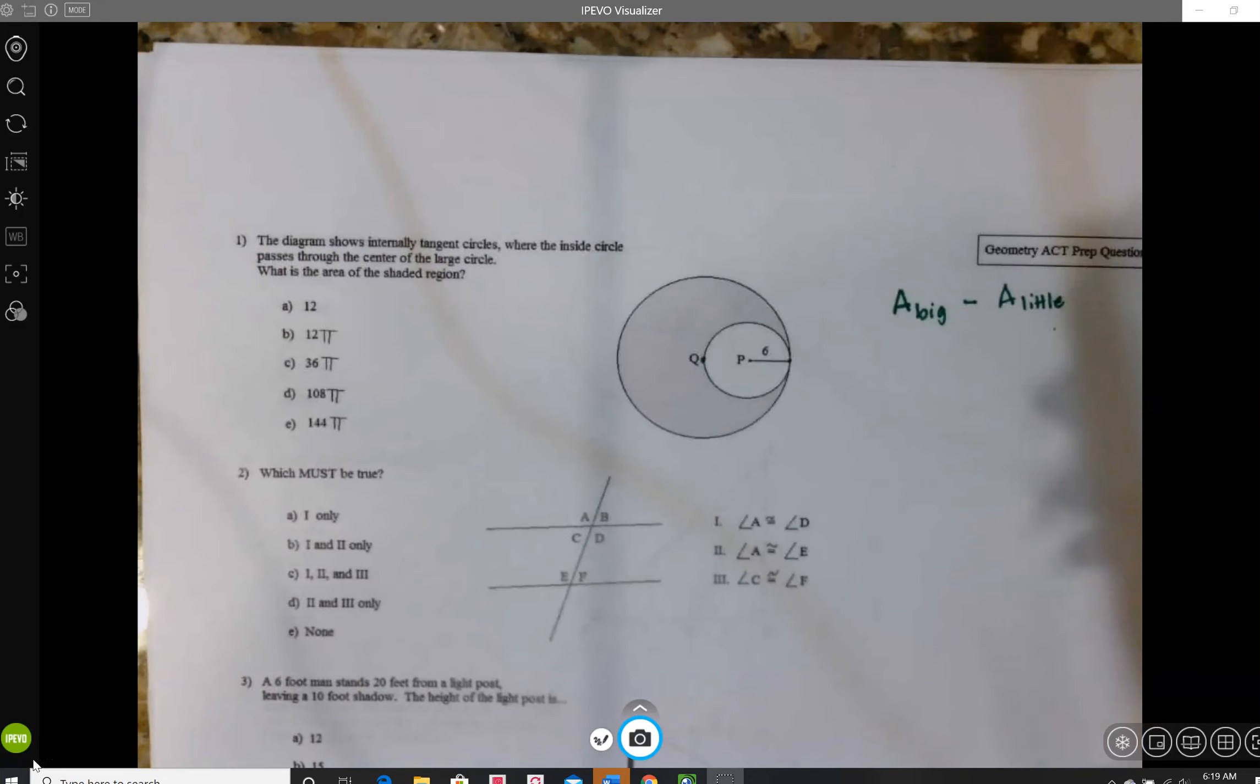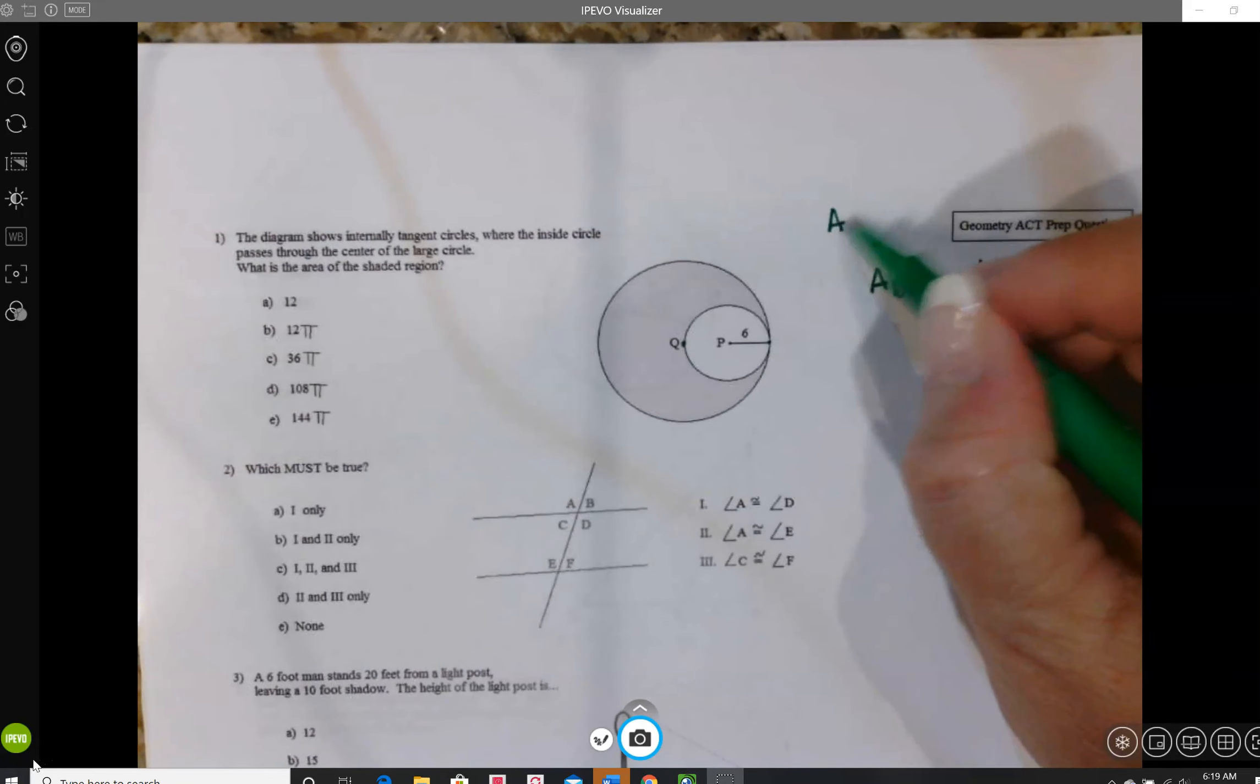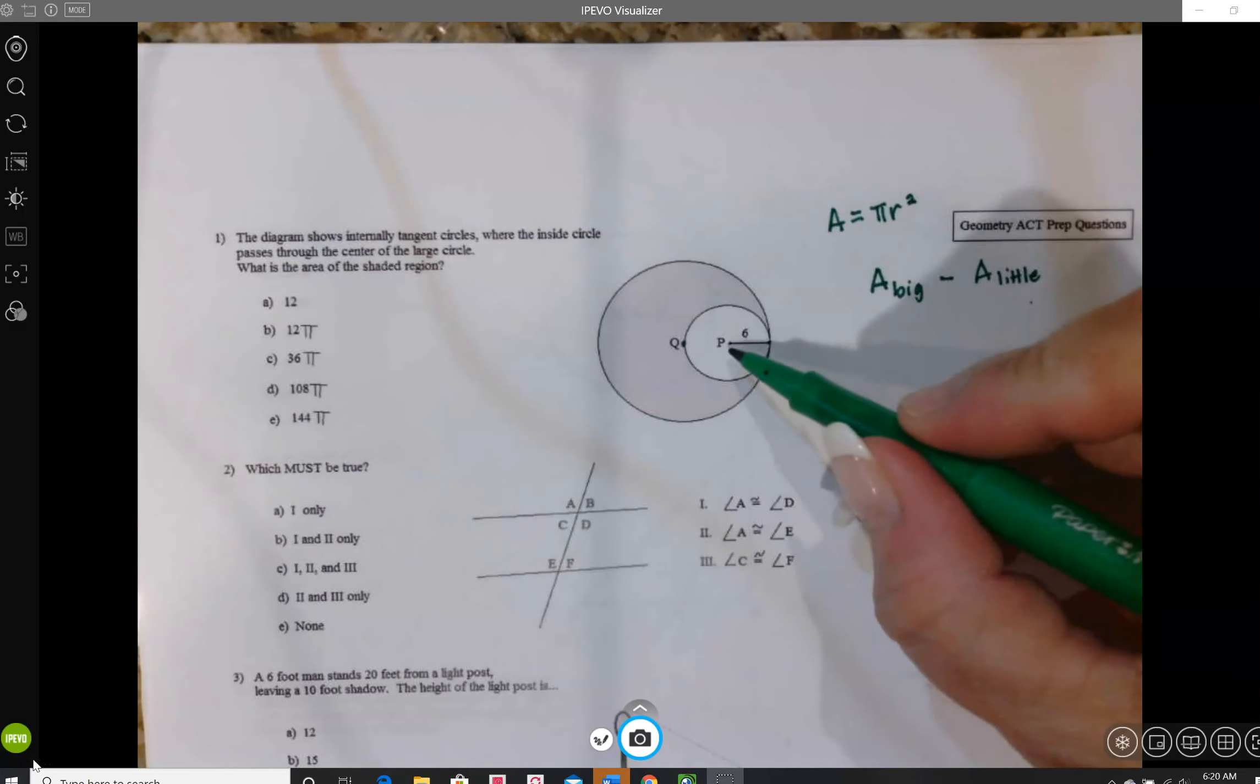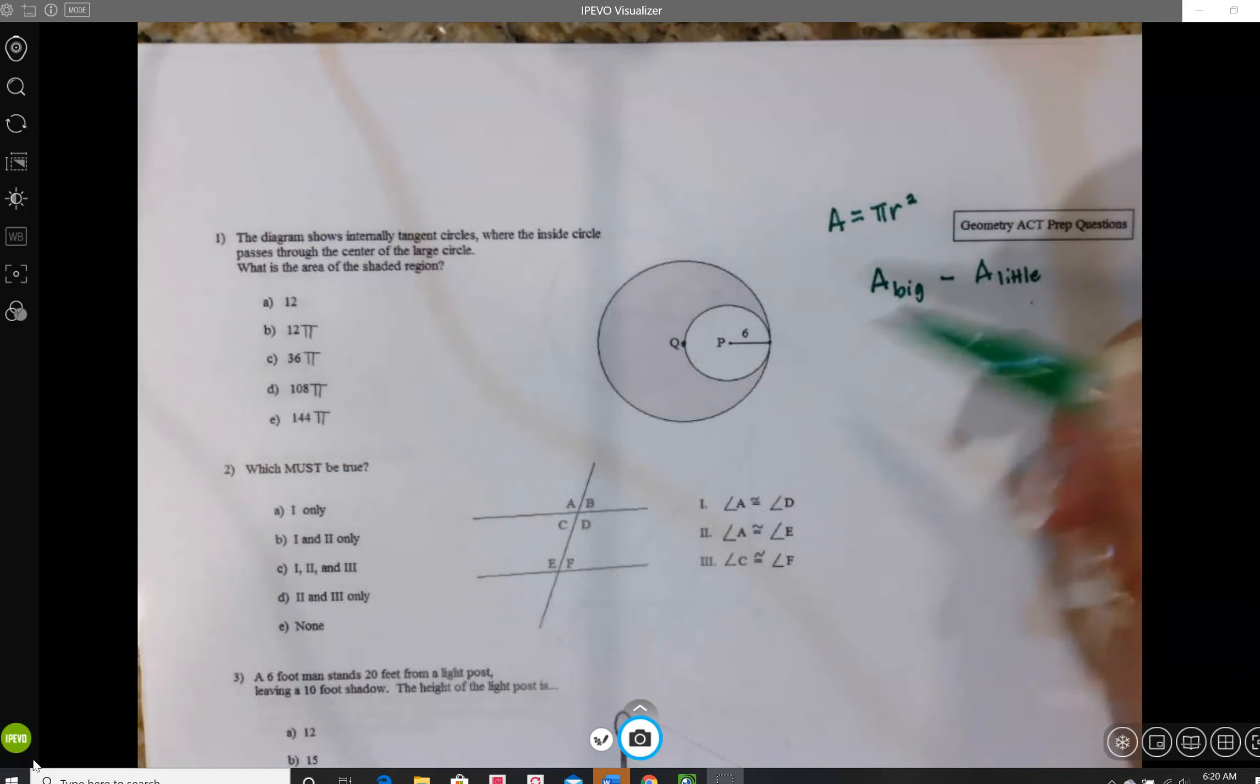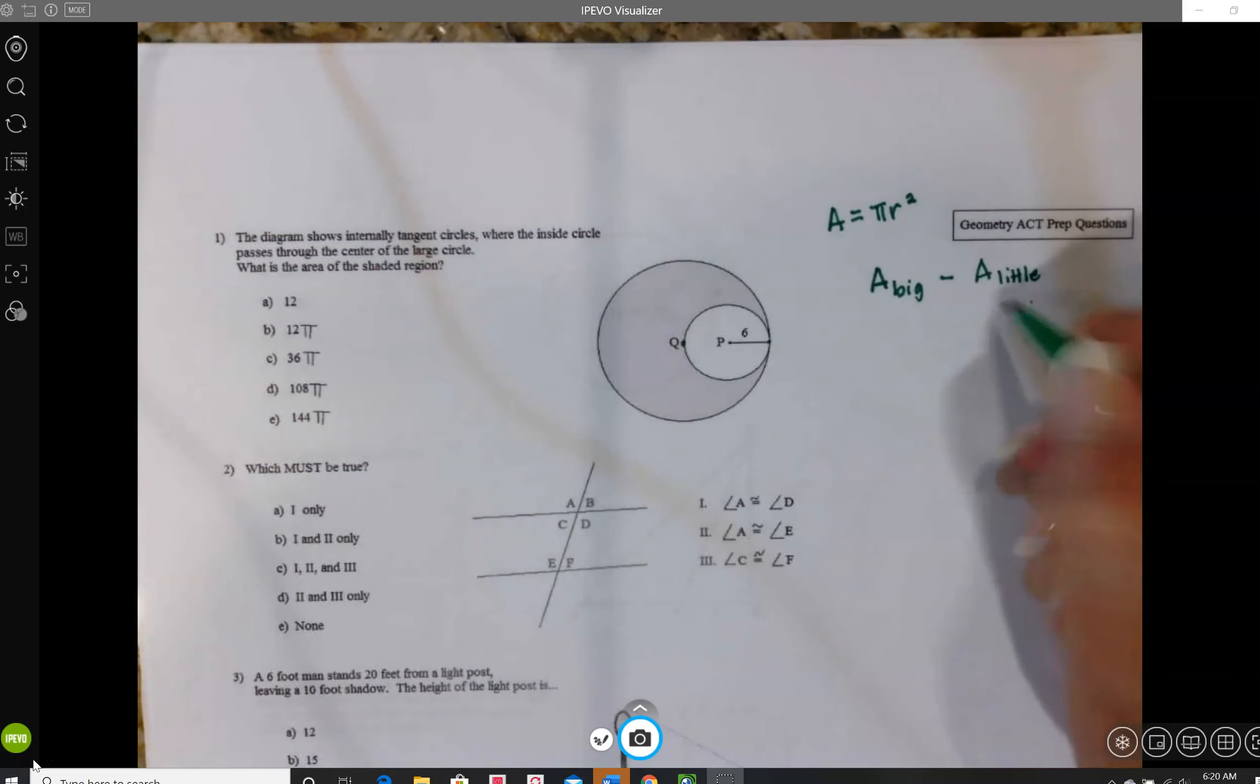And I know that the area of a circle is always using the formula pi times the radius squared. And the radius is the distance from the center to the edge. So right here in my diagram, I can see the radius of the small circle is 6. So I can go ahead and fill in the formula. The area of the little circle is pi times the radius squared.